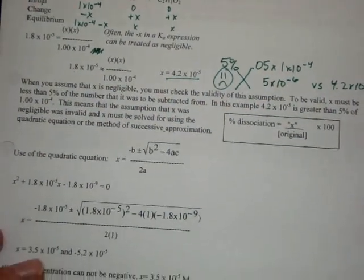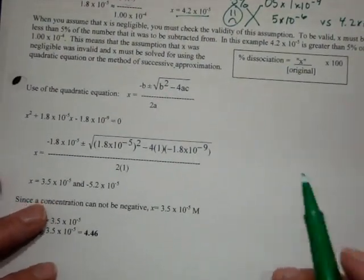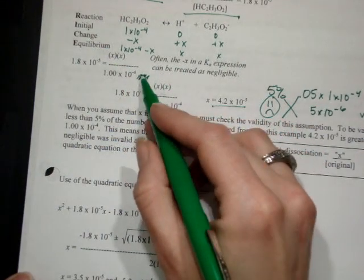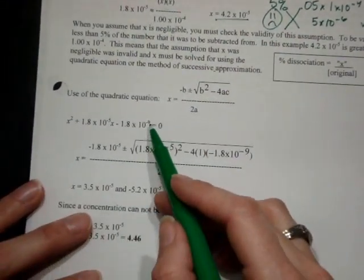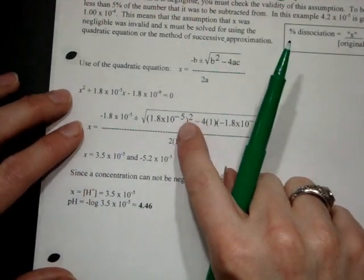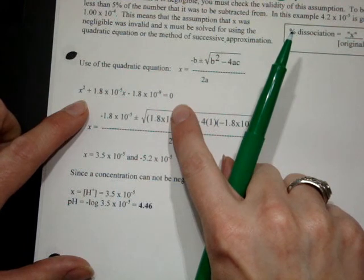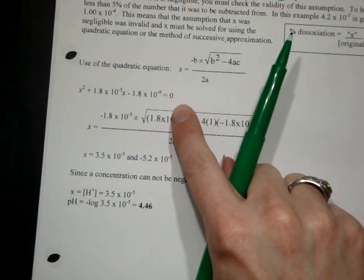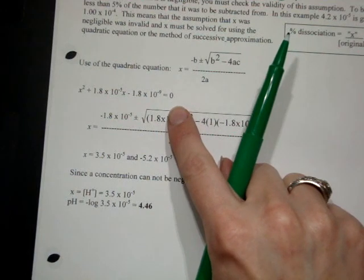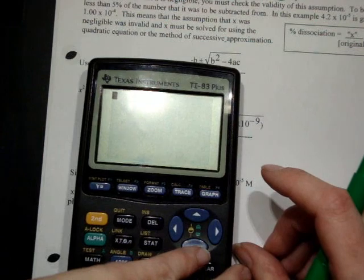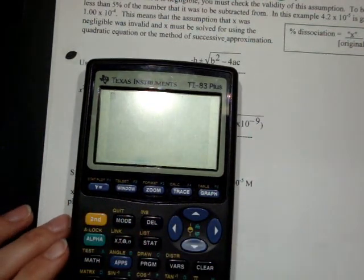Because we can't do that, we have to solve for the quadratic equation. Go back to putting the X in right here. It's X² + 1.8×10⁻⁵X - 1.8×10⁻⁹. Now, I did go over this in class, but just in case you want to look at it again.